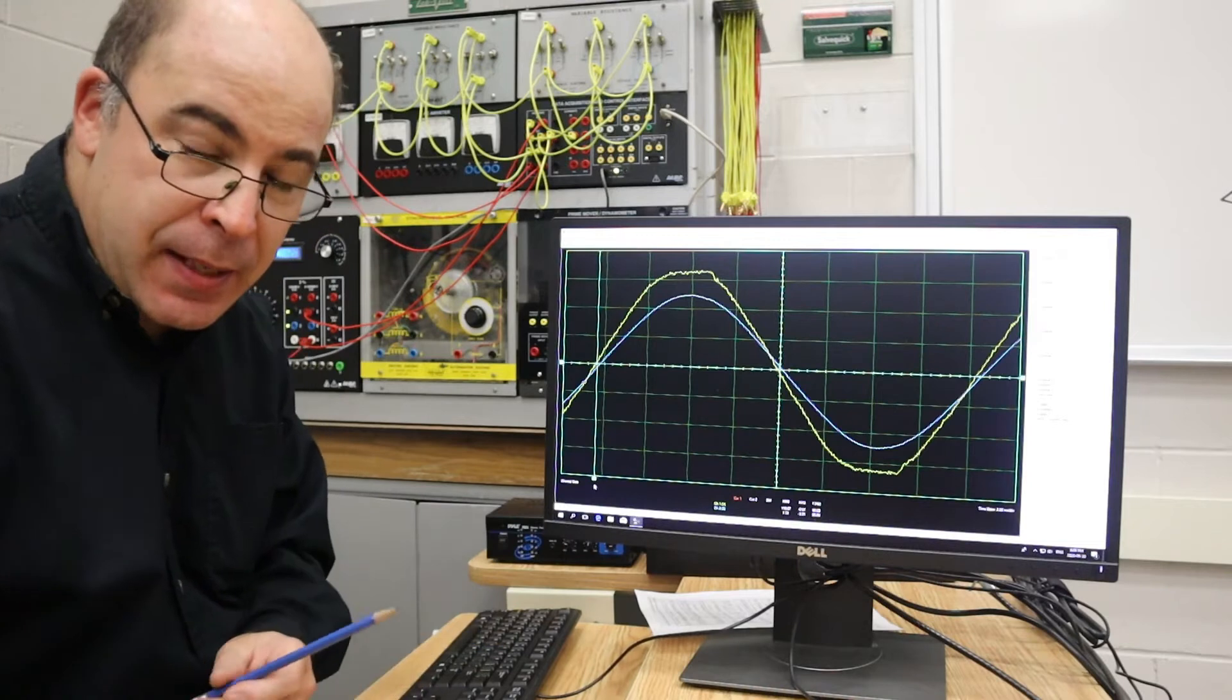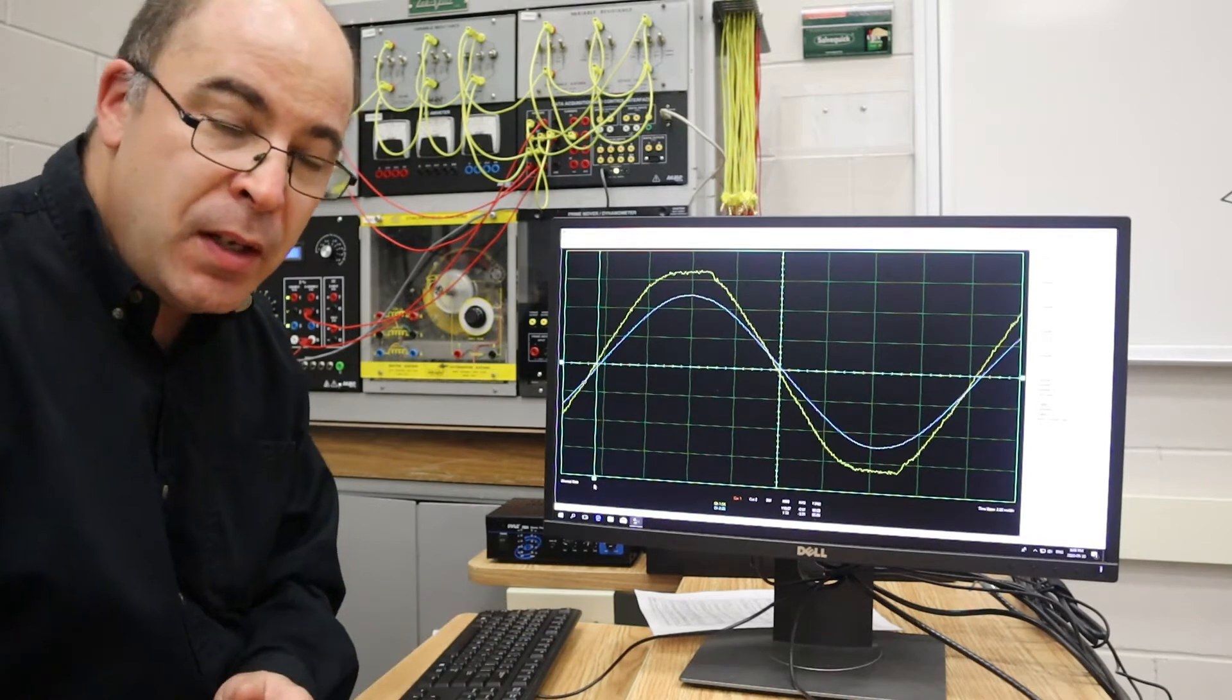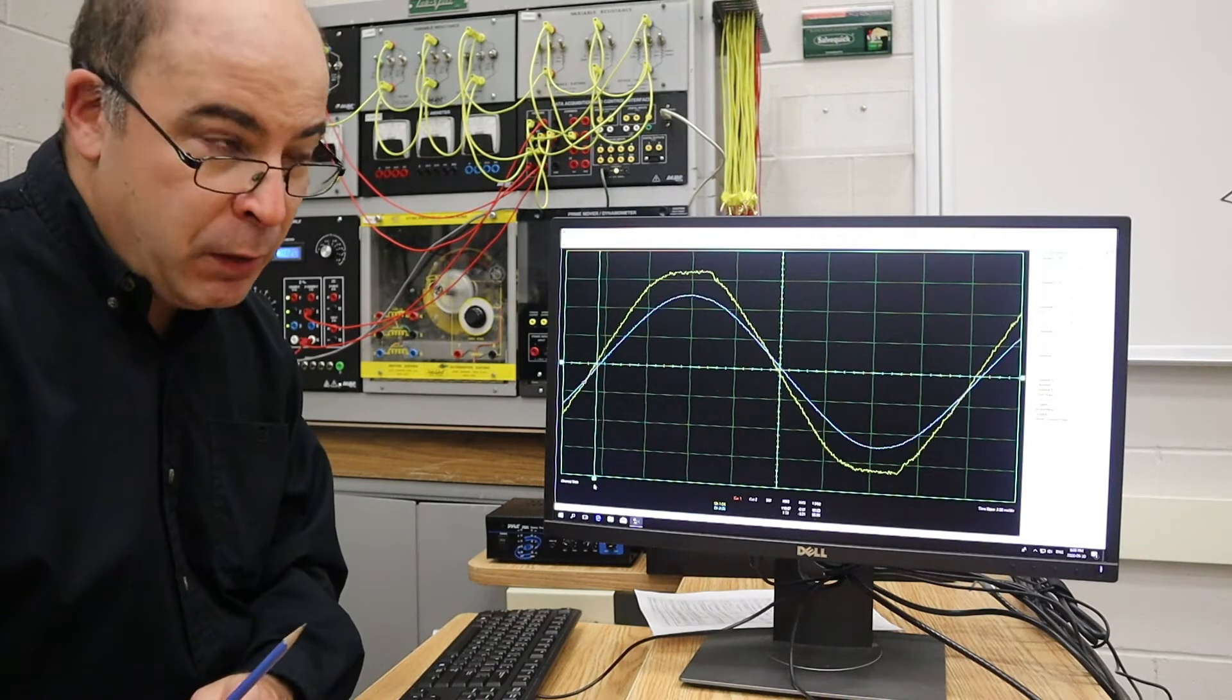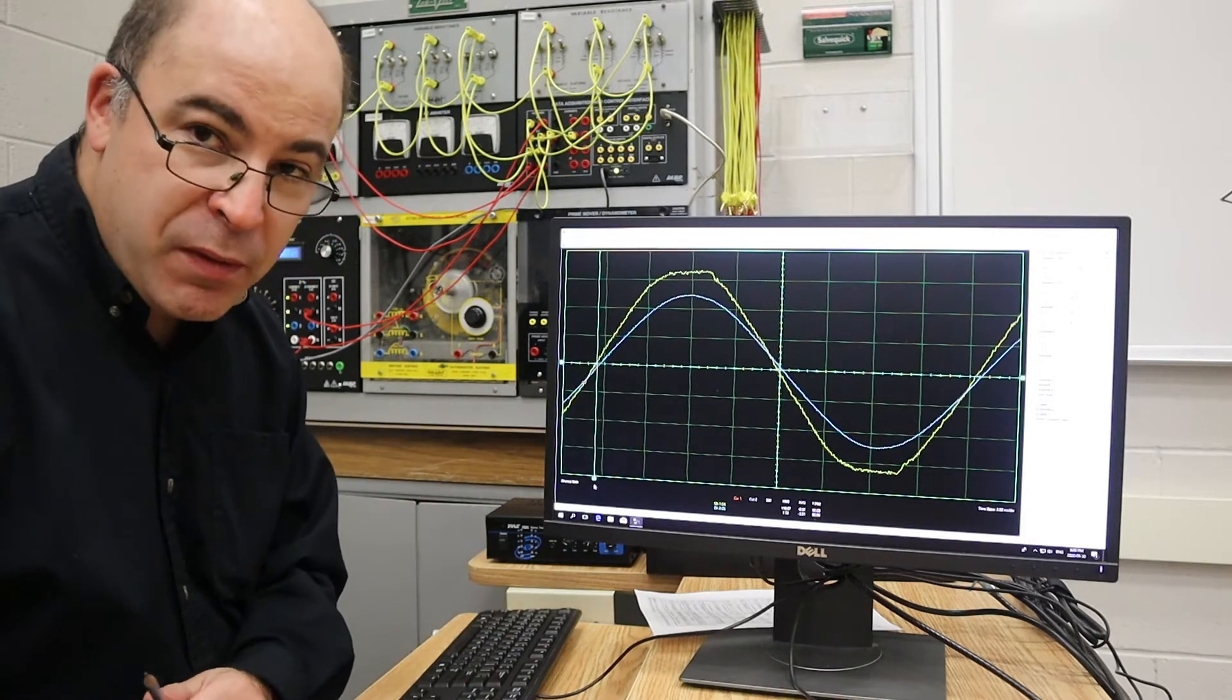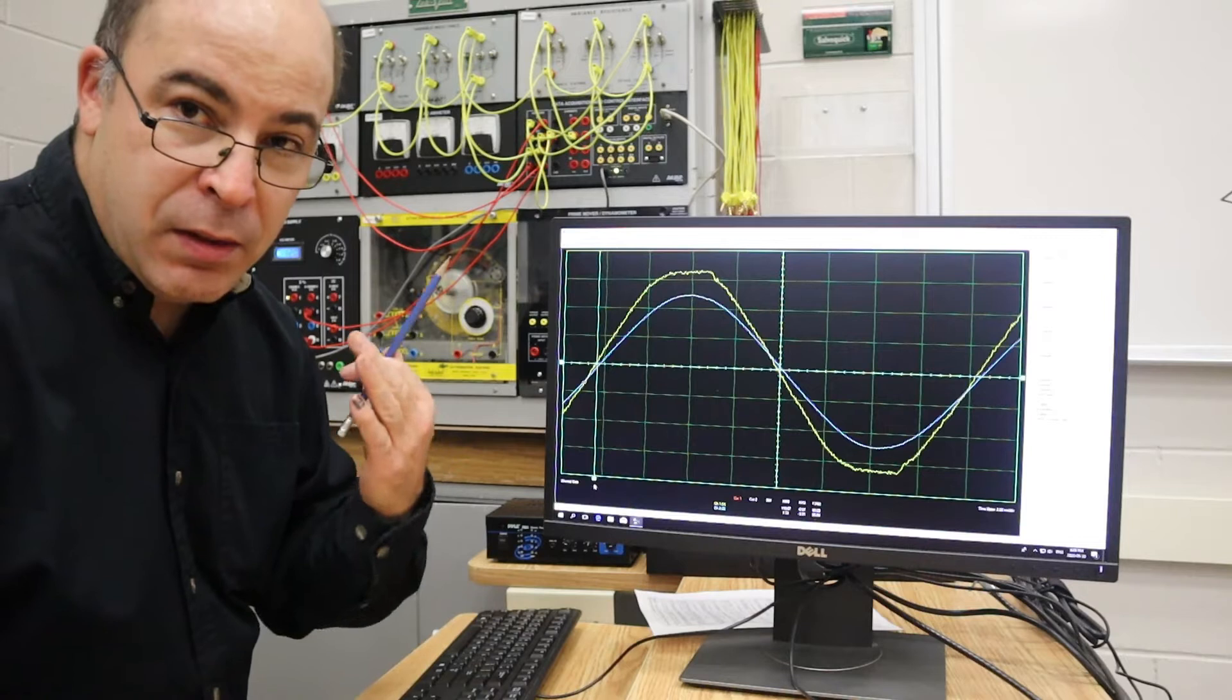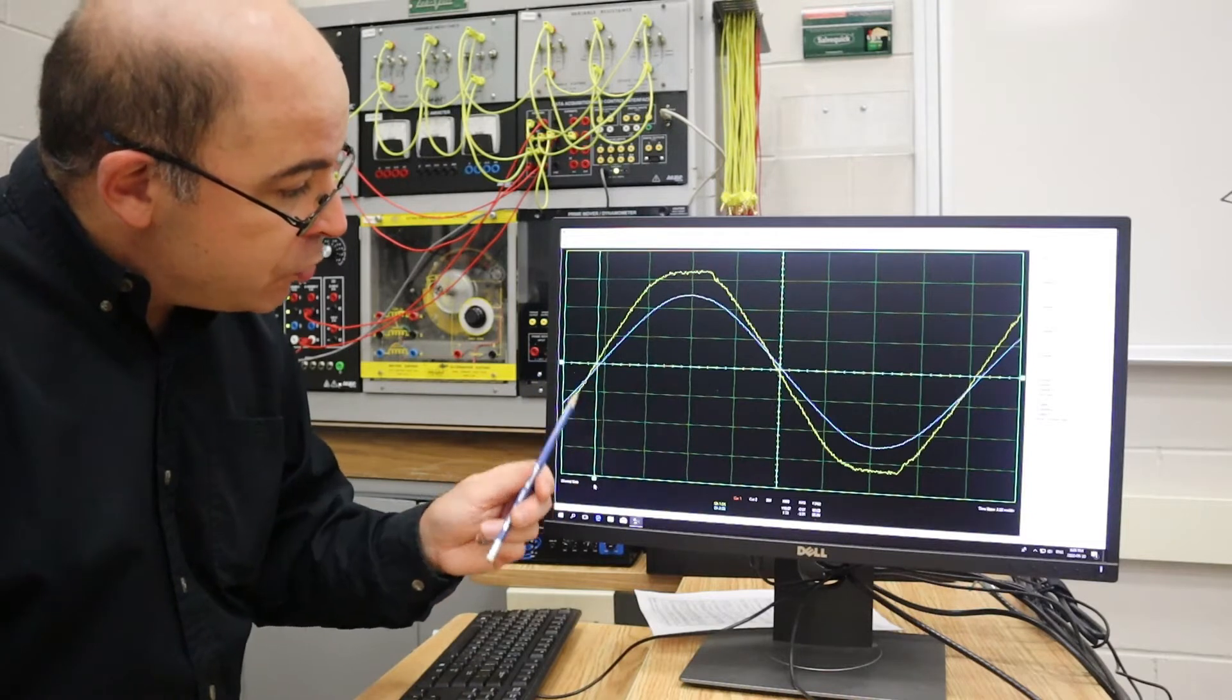What's happening is the load modules that I'm using, the resistive, inductive, and capacitive load modules, they're fixed values and they are fairly accurate, but they're not extremely precise. So we're off by about almost five degrees, but we are in the neighborhood. The trend is what we're looking at, specifically the voltage-current relationship.